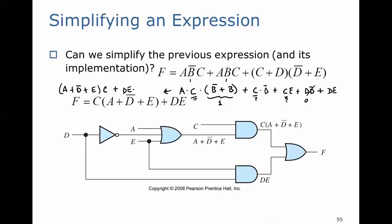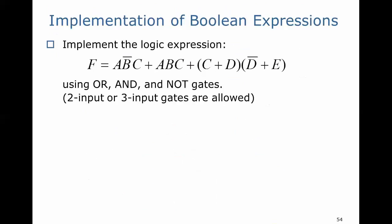And that is what we have here. And so now when we implement that using AND, OR, and NOT gates again, we see that we only require five gates instead of eight gates.